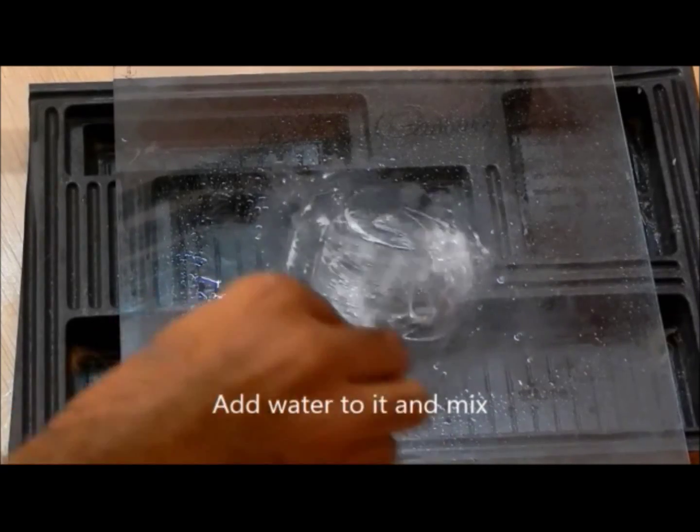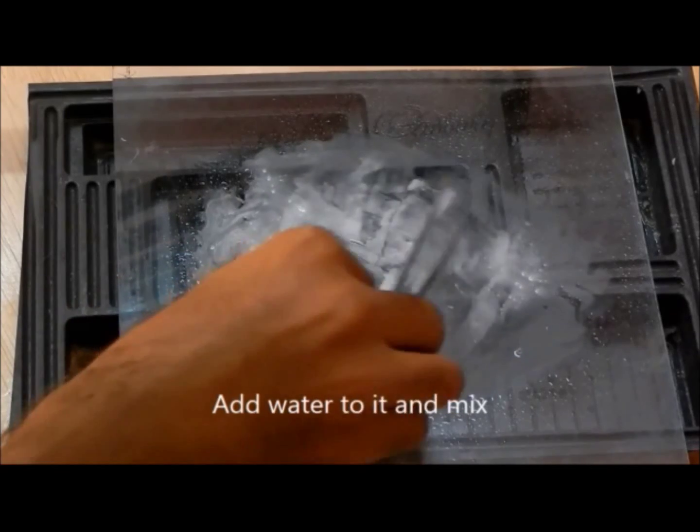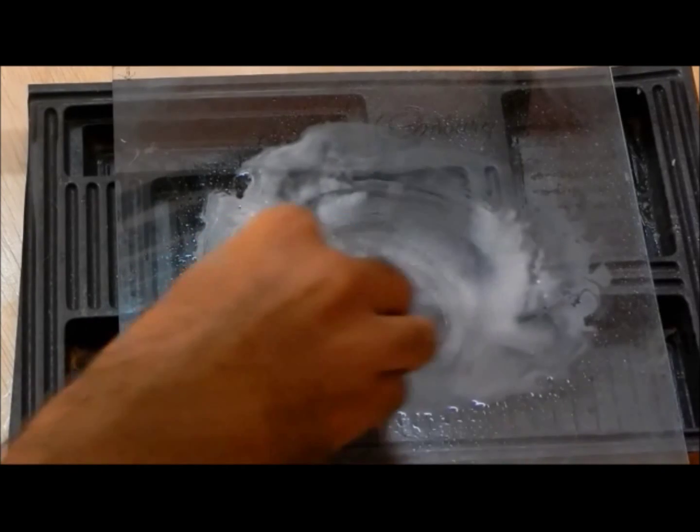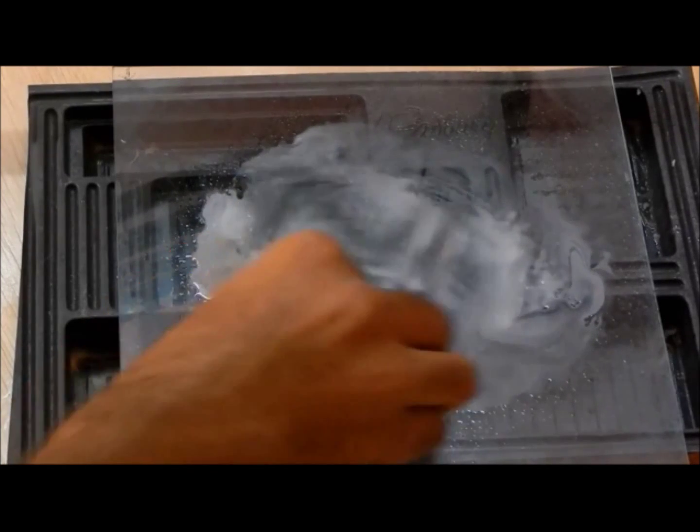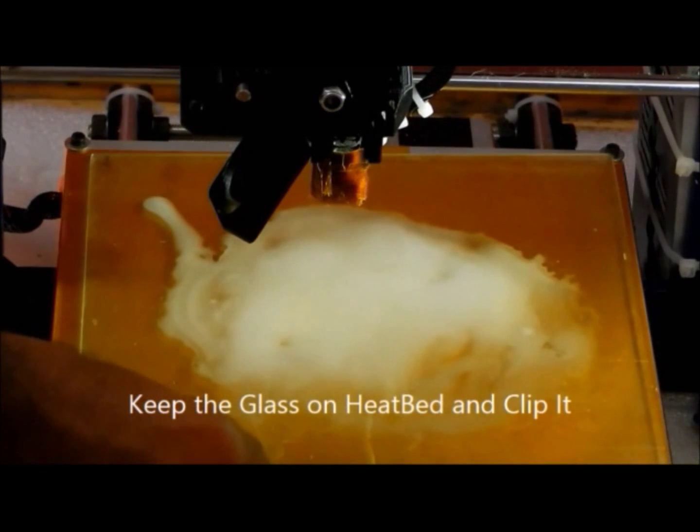Once the fevicol spreads evenly on the glass plate, it acts as a raft. When you heat the glass plate, the water dries and only fevicol is left. It acts as a raft when you print with PLA, so the first layer sticks really well to the surface of the glass.